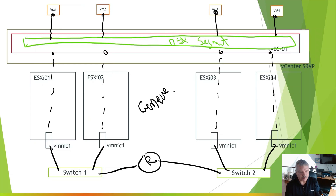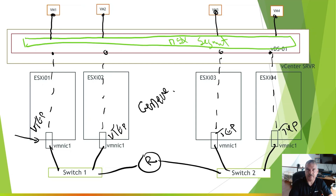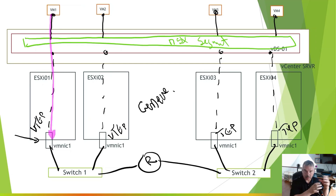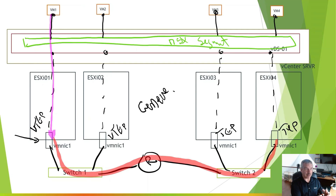The NSX segment uses Geneve as its encapsulation. Down here at the bottom where our physical NICs are, we call these things VTEPs — virtual tunnel endpoints — or you can call them TEPs. The TEP's job is to take your Layer 2 frame and encapsulate it inside a Geneve frame. So when VM1 fires out traffic going to VM4, the TEP receives it, takes that Layer 2 frame, puts it inside a Geneve frame, and fires it across the network — notice it goes through the router now. The TEP at the other end, the destination TEP, decapsulates: it looks at the Geneve header, strips it off, and sends the original frame up to VM4.